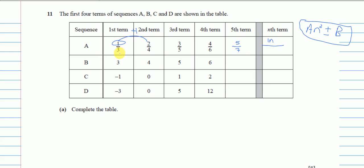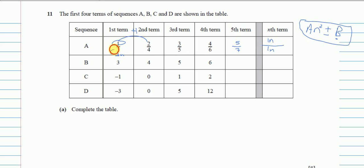For the next sequence, it also increases by one each time, so it is again 1n. To find the constant, we compare 1n with the first term, which is 3. To get from 1 to 3, we add 2. So the formula is n + 2.